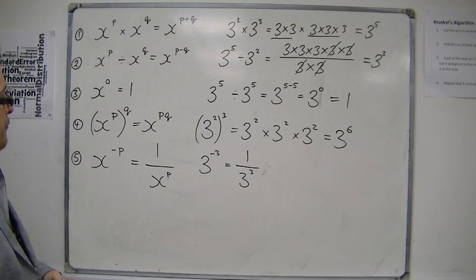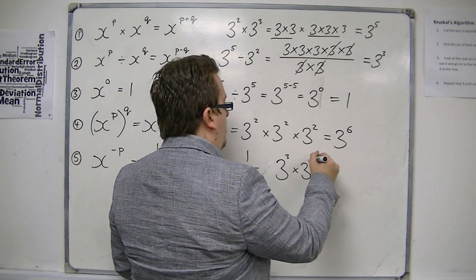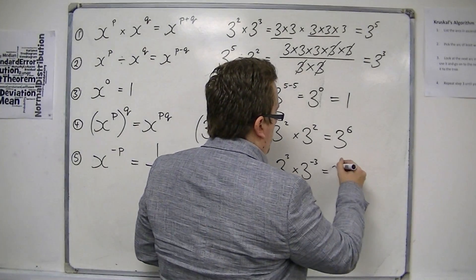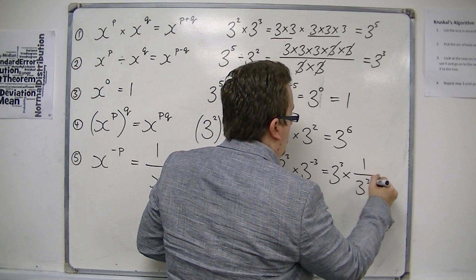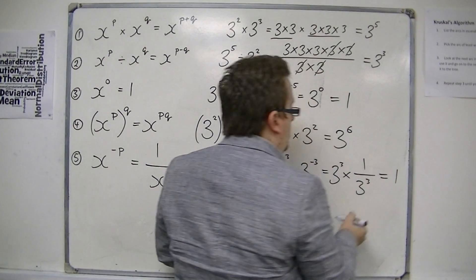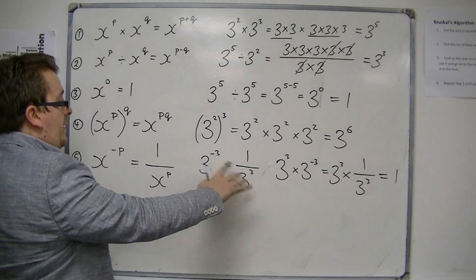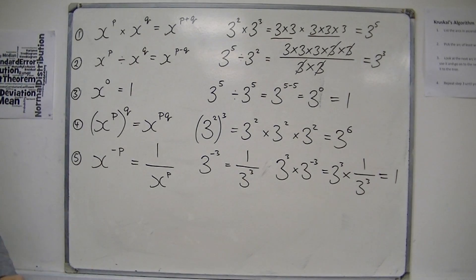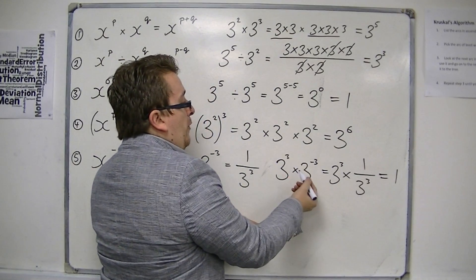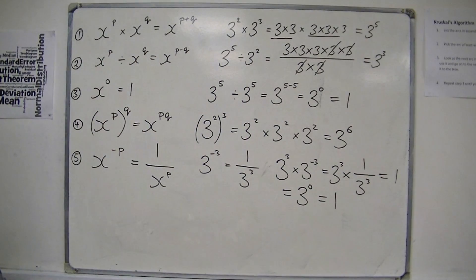Now, where does this conclusion come from? If you had 3 to the power of 3 and you multiply it by 3 to the power of minus 3, then we've got 3 to the power of 3 times 1 over 3 to the power of 3, which would be 1 — because this is the same as 3 to the power of 3 divided by 3 to the power of 3. And using the multiplication rule, the indices add together, so this is the same as 3 to the 0, which we also know is 1.